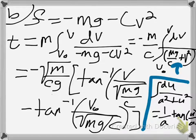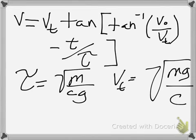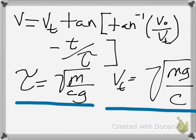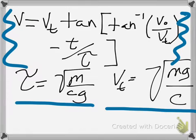Carrying out that integral, here is my result. You're basically just substituting into the formula. With algebra, I can simplify that and get v. That equation got messy fast, so I made two substitutions. I called tau equal to the square root of m over cg, and vt equal to the square root of mg over c. With those substitutions, here is the result when I solve for v. That is the velocity for the object going up.